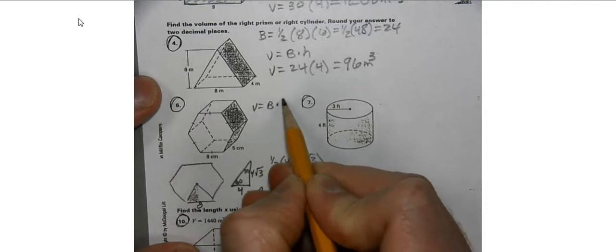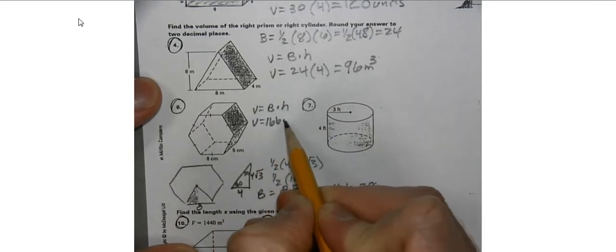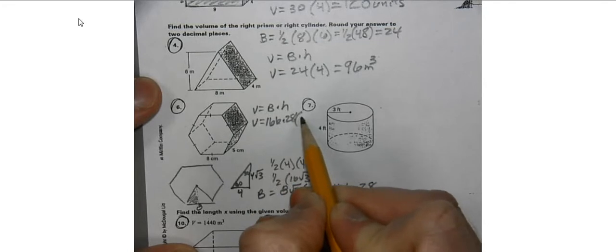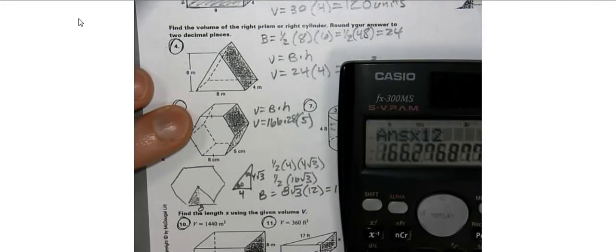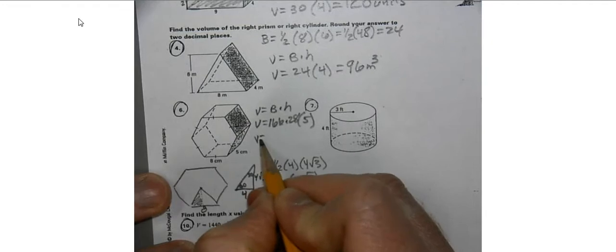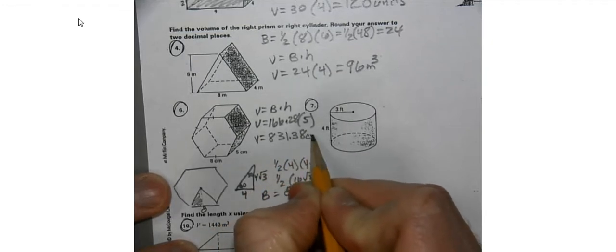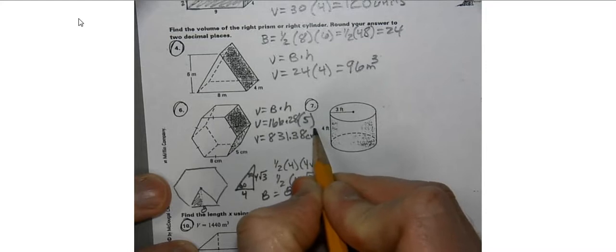Once you have the base, the volume is going to be the base times the height. So we have 166.28 times 5, which gives us 831.38 centimeters cubed.